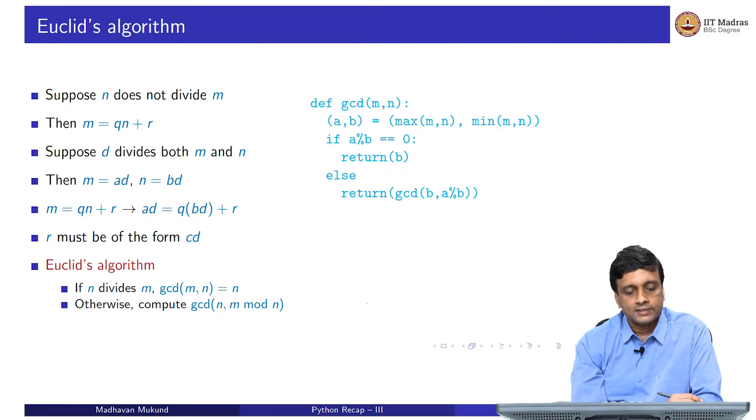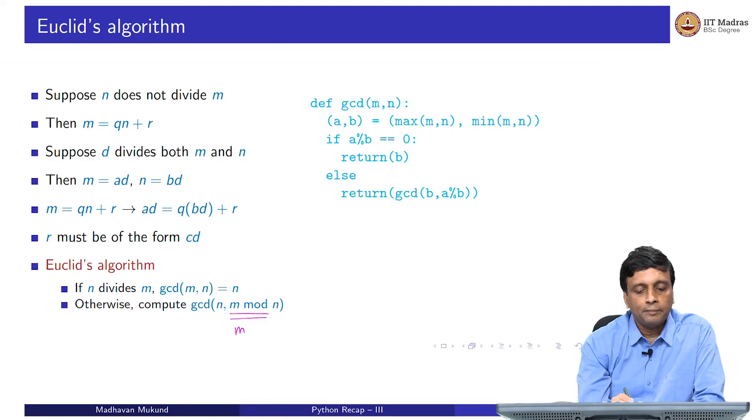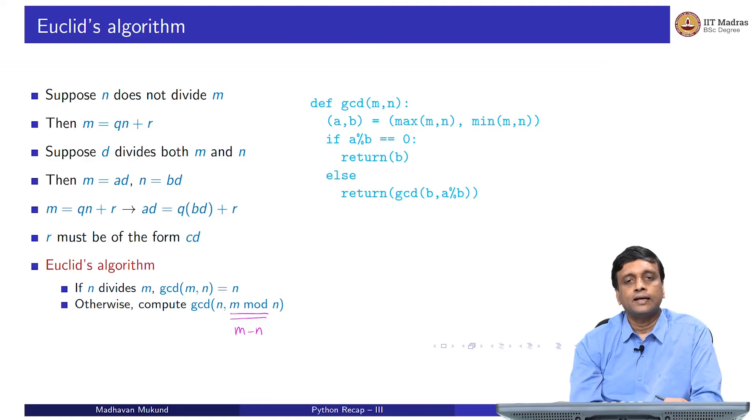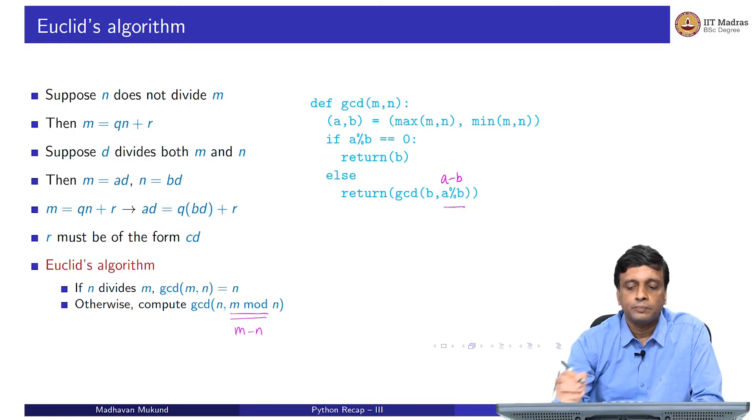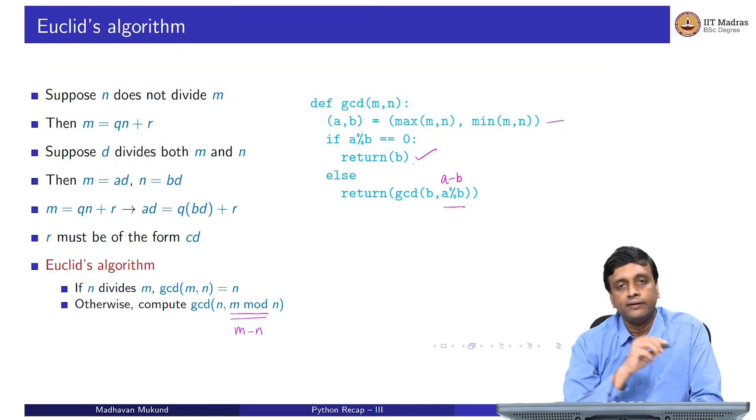This gives us what is called Euclid's algorithm. In Euclid's algorithm, the difference is that instead of taking m minus n as in the previous case, we take in mathematical terms m mod n. M mod n is the remainder, which in Python terms is this percent operator. The only difference between the previous thing and this is earlier it was a minus b, now it is a percent b. Everything else is the same. I compute a to be the maximum, b to be the minimum. If b divides a, then I return b as before - the smaller number divides the larger number, it is the GCD. Otherwise, I go down to the smaller number and the remainder, not the difference.